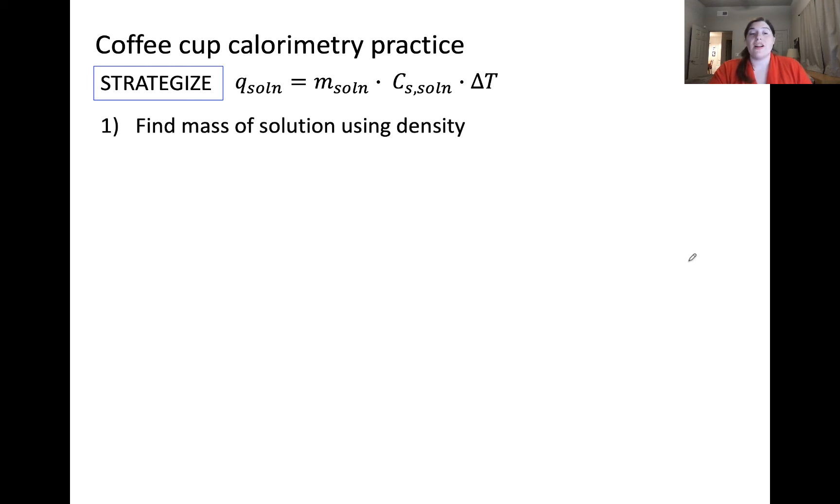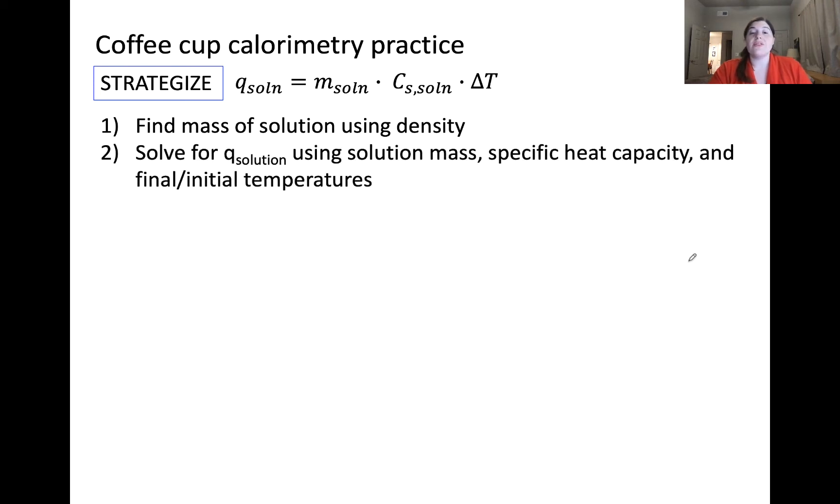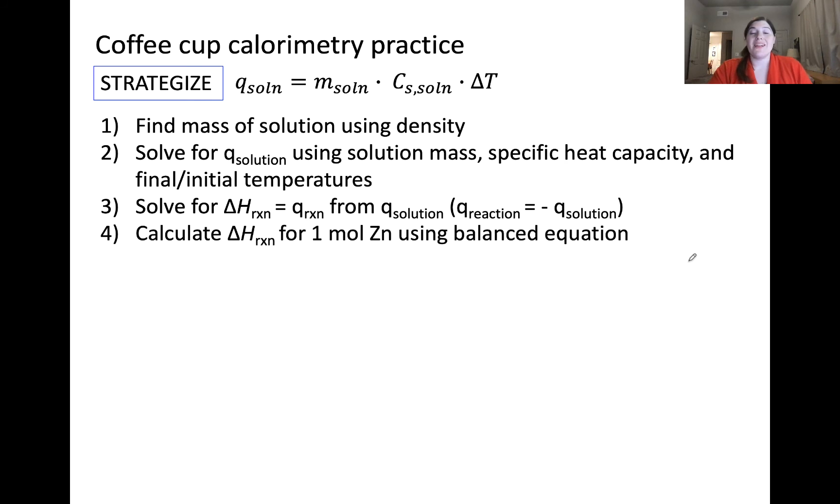Our first step in our strategy will be to find the mass of the solution using its density. Next, we'll solve for the heat of solution using all of the variables relevant to the solution. Then we'll take advantage of the relationship that Q of reaction is equal to negative Q of solution to calculate the change in enthalpy of the reaction. Then we need to extend this analysis to look at the change in enthalpy of the reaction for one mole of zinc reacting using the balanced equation.